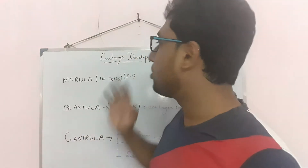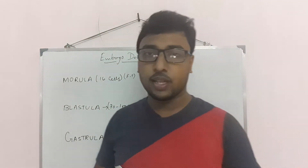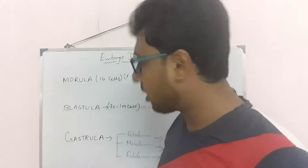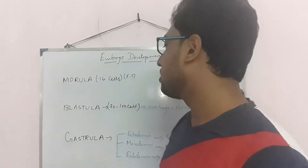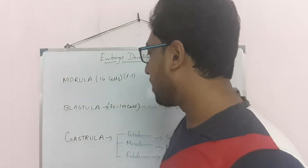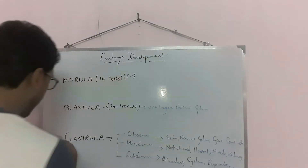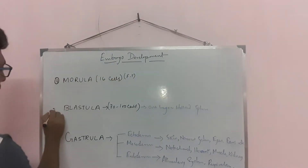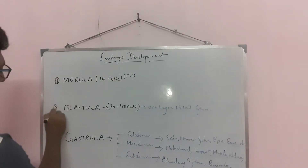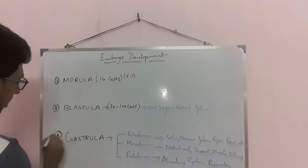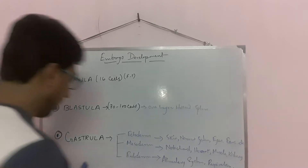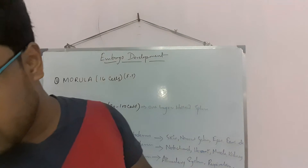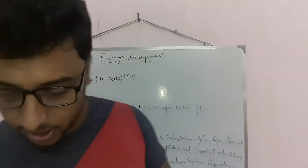There are three steps in cleavage: number one, morula; number two, blastula; and number three, gastrula. These three steps are involved in the formation of the embryo in the human body.